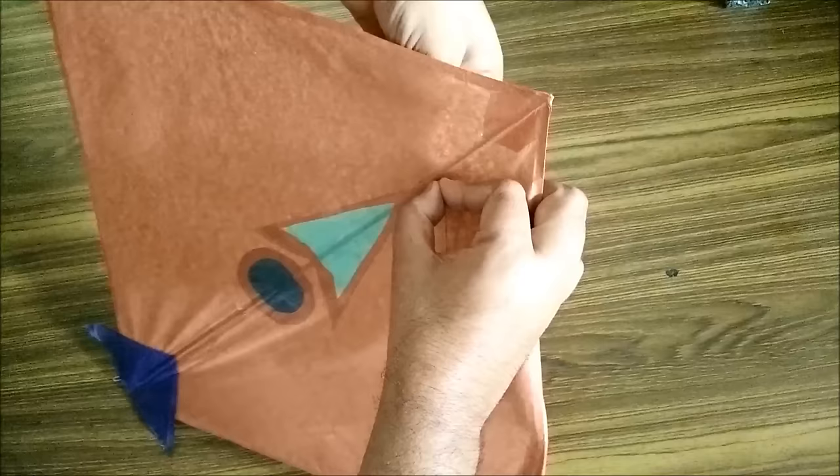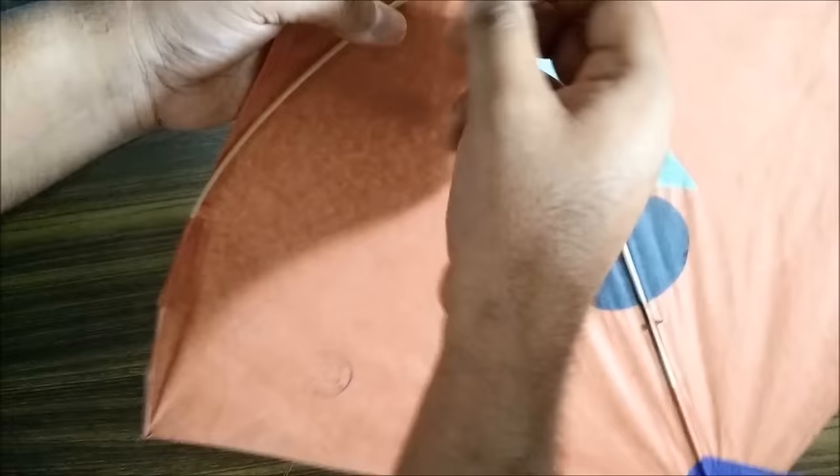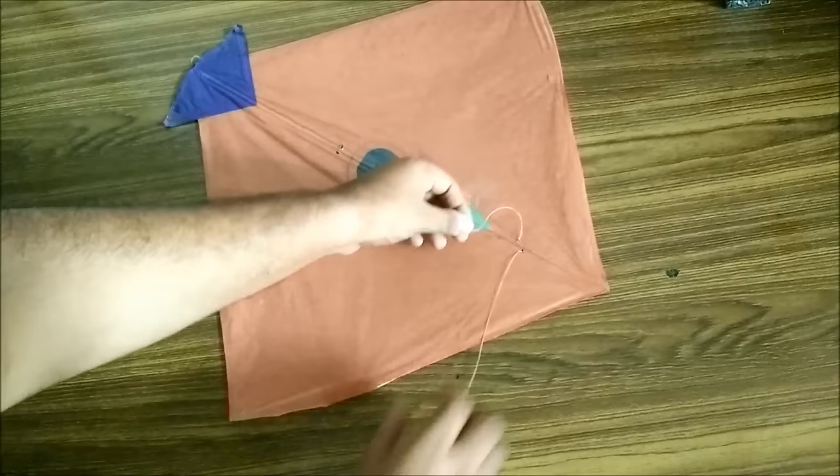So we will insert the thread from one of this hole here. And at the back we will make the thread cross the two sticks so that to tie them together. And again pass through the hole.